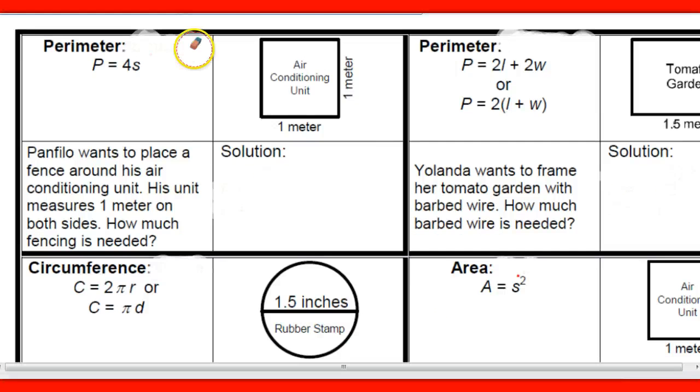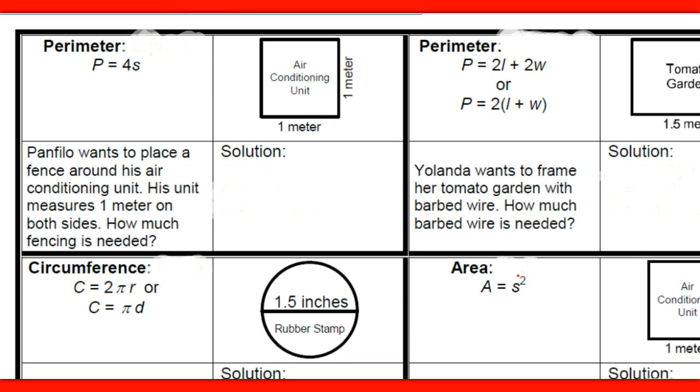So in order to do that, we have to make sure that we understand that the formula for that particular square is P equals 4S. How will we solve it? Well, we look at the S and just substitute it into the formula. So we will have P equals 4S, and then we'll substitute 1 for S. That's going to give us P equals 4 times 1, and then now that'll be P equals 4 meters. But one thing you want to make sure that you understand that these are meters squared.